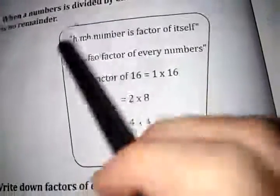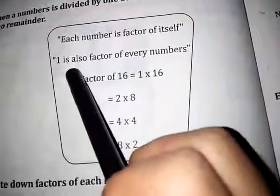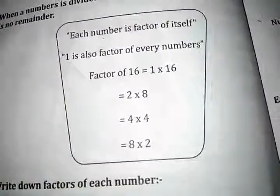In the box: each number is a factor of itself, and one is also a factor of every number.